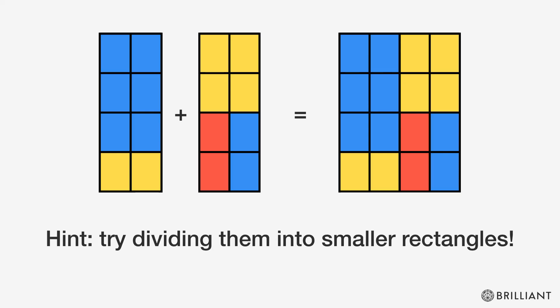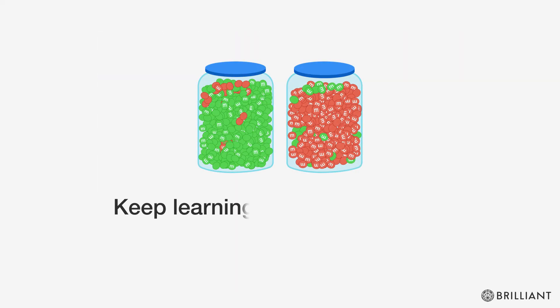Try dividing them into smaller rectangles. Keep learning rates and ratios at brilliant.org.